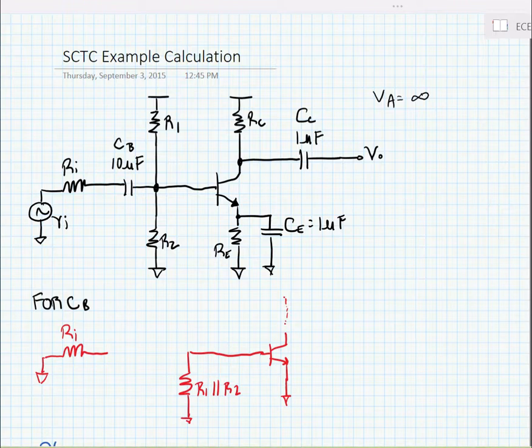So here we have a common emitter amplifier. Our input is on the base and our output is on the collector, and we have three coupling capacitors or decoupling capacitors. We have CB at 10 microfarads, CC at 1 microfarad, and CE at 1 microfarad. Now these are on the scale where they are going to affect the low frequency response of the circuit.